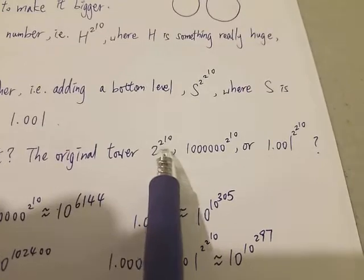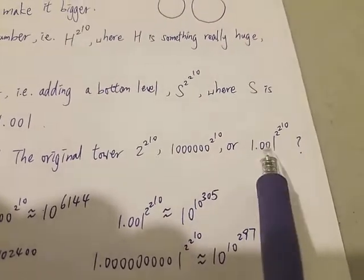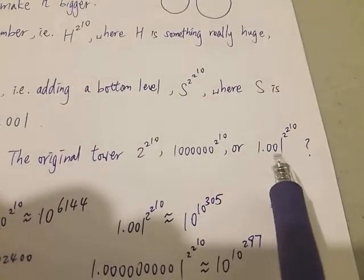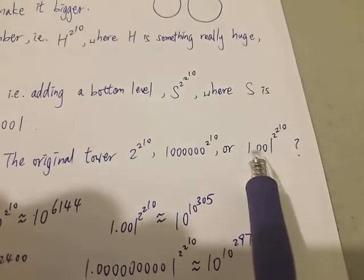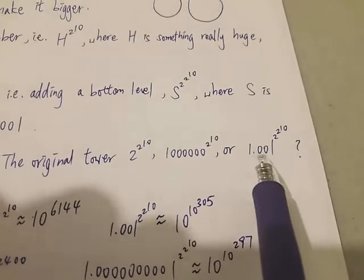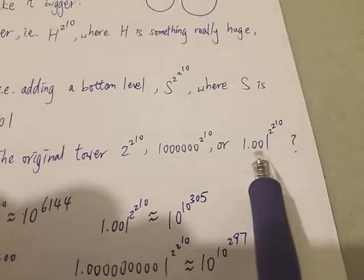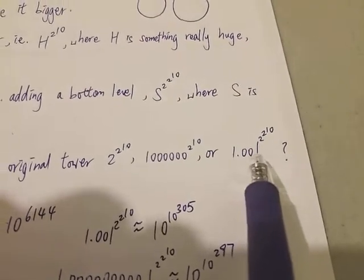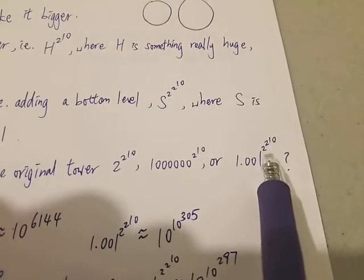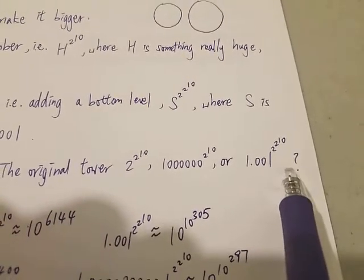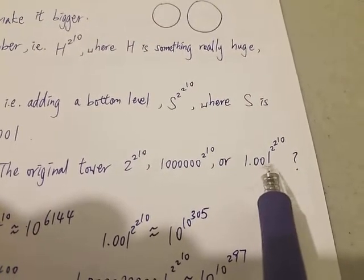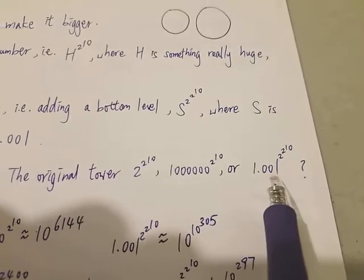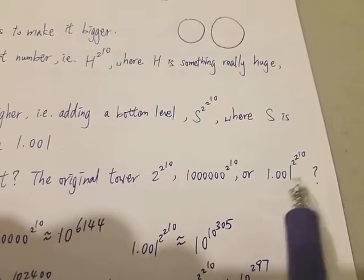This one has three levels, this one also has three, but this one has four levels including the base. But the base is very very tiny. 1.001 is for most people almost the same as 1 — it's very close to 1. And 1 to any power is just 1. So before we discuss further, I believe most people would say this one is the smallest. But let's see if that's the case.